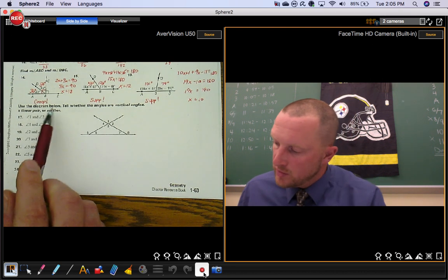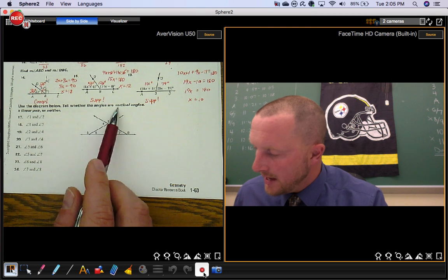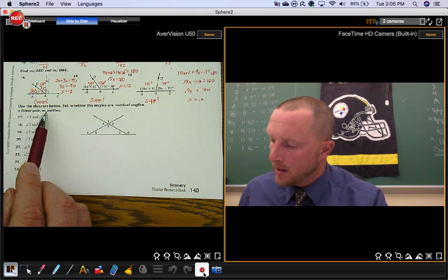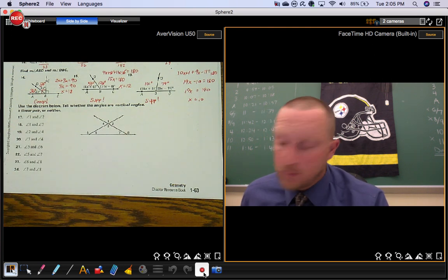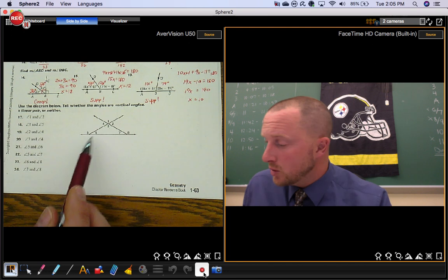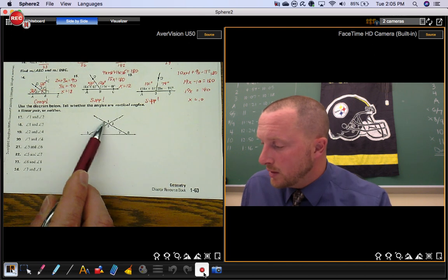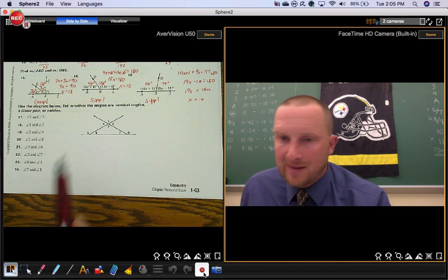Okay, last section here, we're going to use the diagram below to tell whether the angles are vertical, a linear pair, or neither. Okay, so if you're not sure, let's just look at angles 1 and 2 right here. See how they make this line? That's a linear pair.